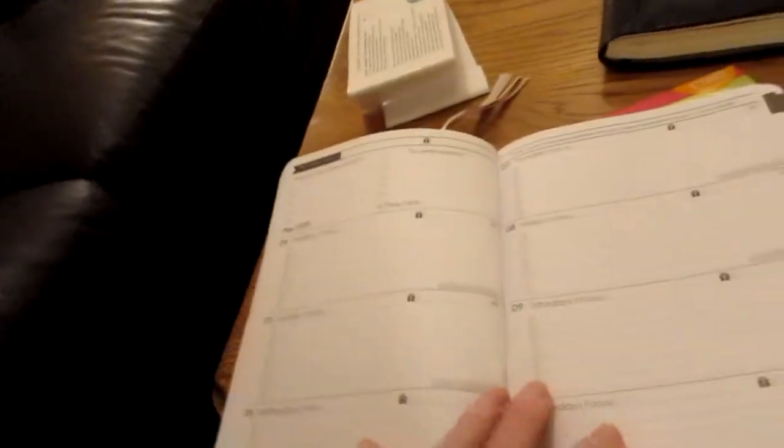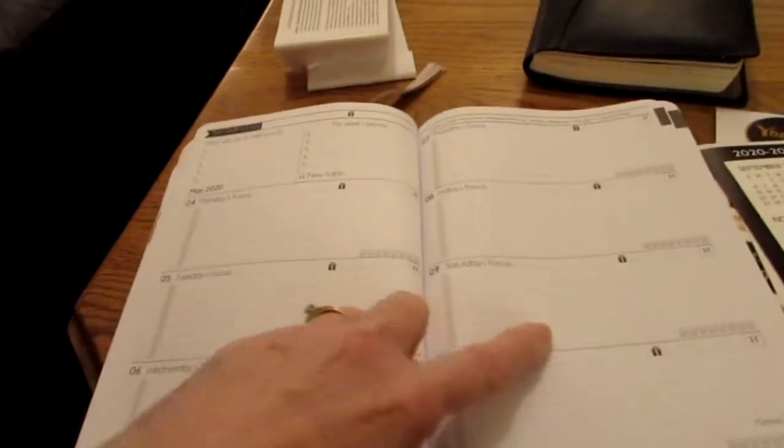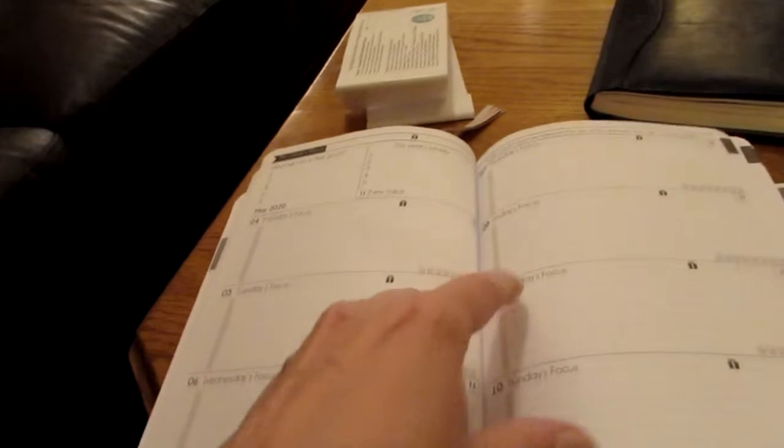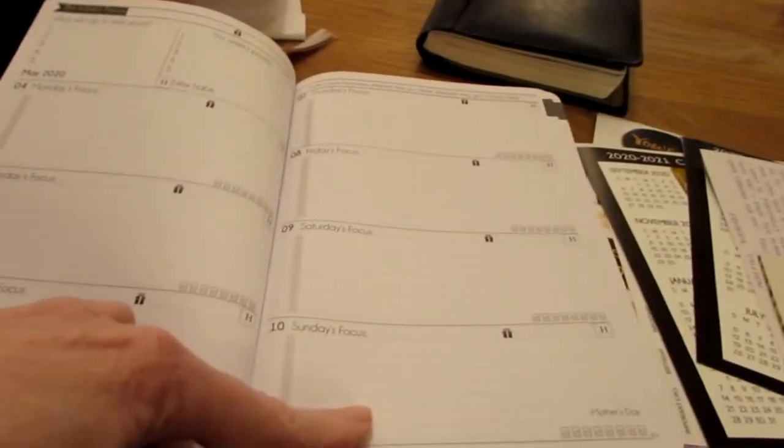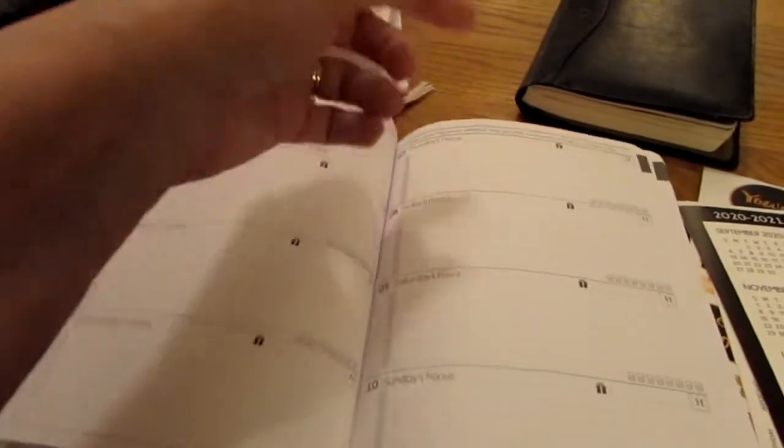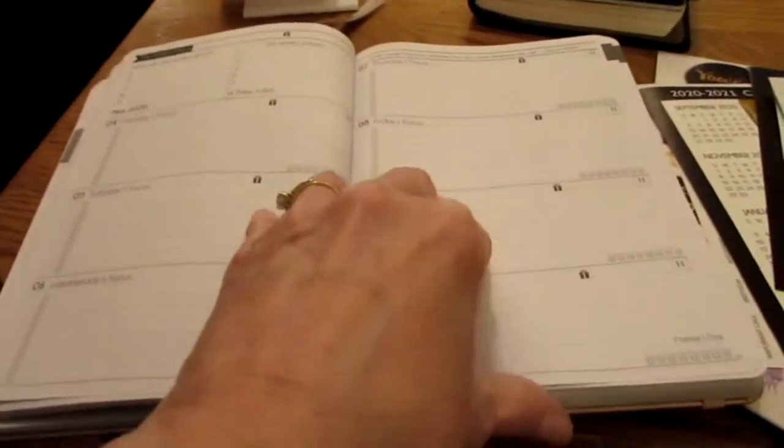But anyway, it has this layout, which is good for me because that vertical layout just not happening for me. I do like that Saturday and Sunday are on a separate page. And on these days, I'll be writing, I don't know, meal plans, diet, what I weigh and all that kind of stuff.